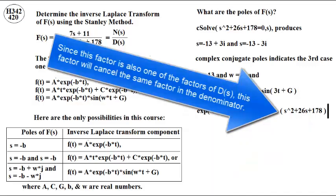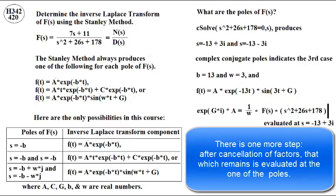Since this factor is also one of the factors of the denominator, this factor will cancel the same factor in the denominator. There's one more step after cancellation of factors. That which remains is evaluated at one of the poles.